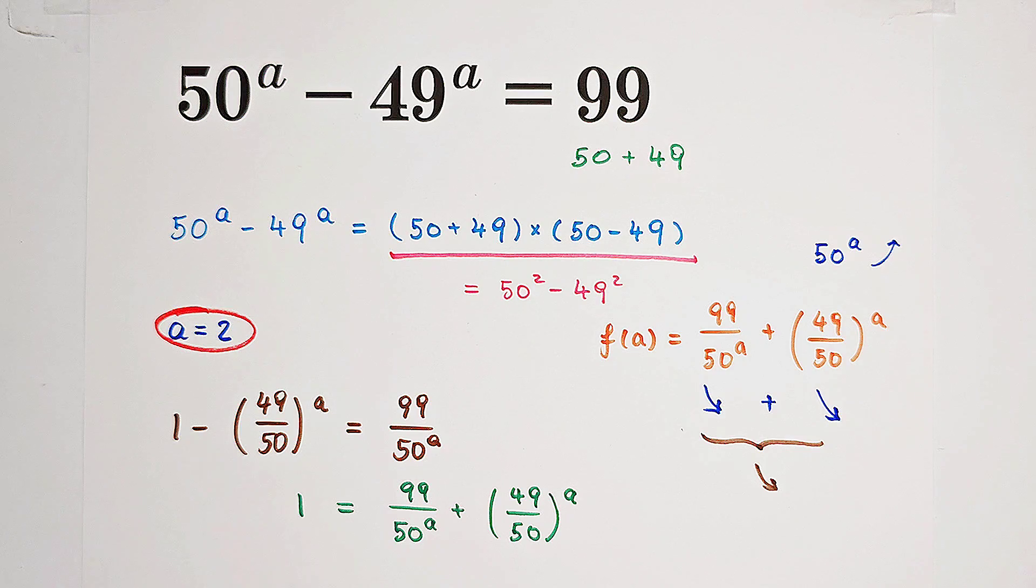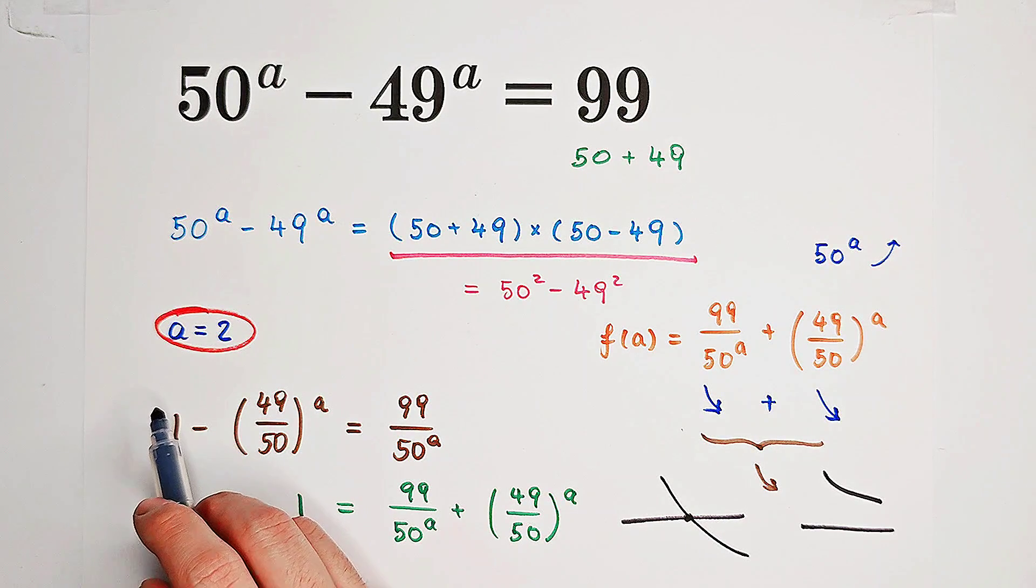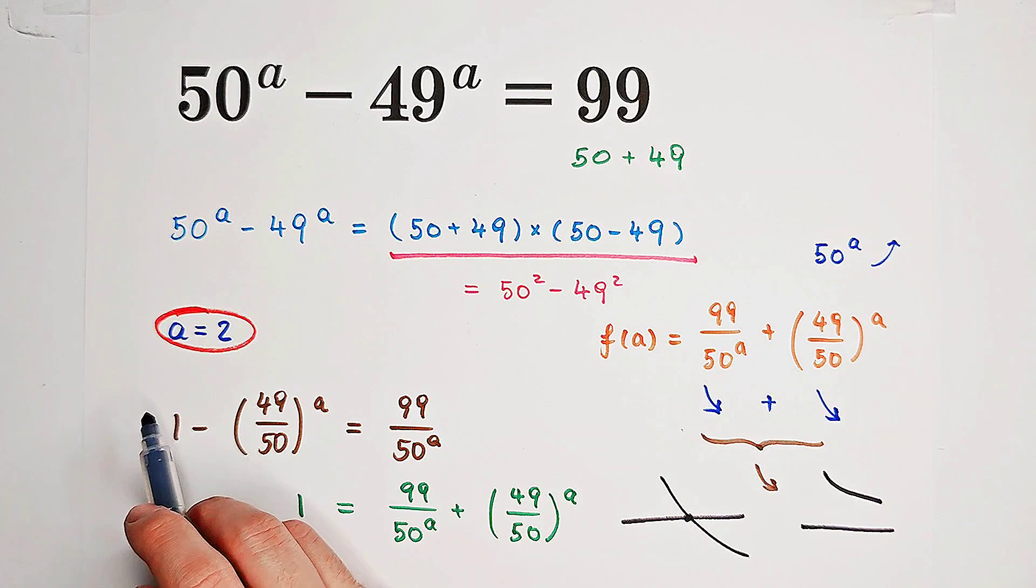This question is also equivalent to the question, how many intersections do these two functions have? They can have one intersection, or they can also have zero intersections. However, we've already known that A equals 2 is a solution to our equation. So, that means there is at least one intersection.